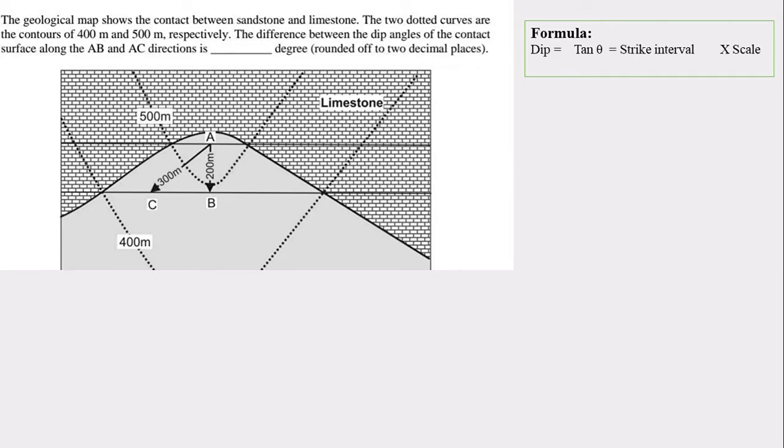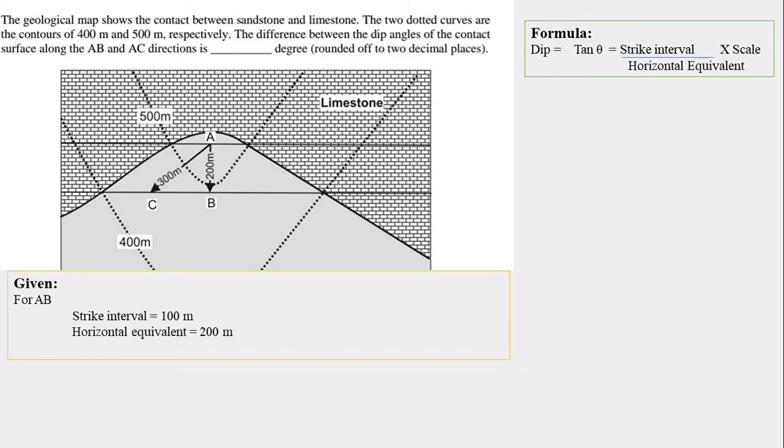So the formula for finding out the dip is equal to tan theta is equal to strike interval by horizontal equivalent times scale. But in this map they are not given the scale. But they had given the horizontal equivalent in the surface value itself. That is 200 meters. So we don't need scale. We can use this value as horizontal equivalent directly. So what they had given is for AB, strike interval is 100 meter and horizontal equivalent is 200 meter. And for AC, strike interval is 100 meter and horizontal equivalent is 300 meter.